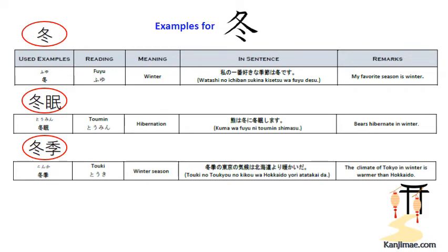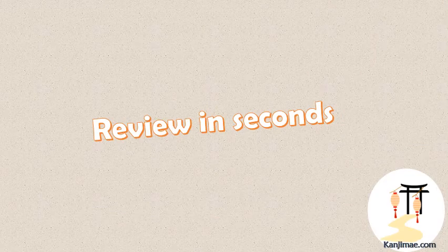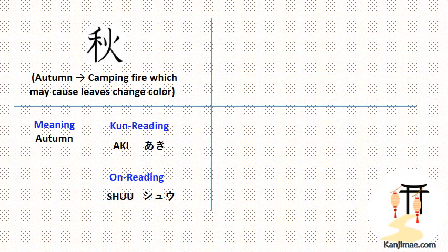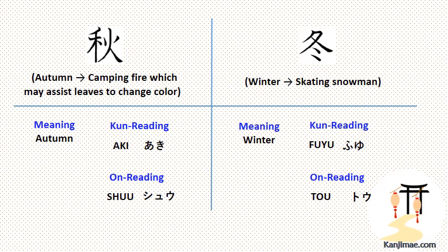Now let's review the last two kanji figures one more time. Our third kanji today, autumn kanji, can be remembered from the camping fire near the tree which may cause the leaves to change color. Its kun reading is Aki — remember Akira Kurosawa — and the on reading is Shu — remember his shooting films were incredible. The last kanji today is winter kanji, whose meaning can be remembered from the skating snowman in winter. Its kun reading is Fuyu — remember the full European tour the snowman dreams of — and Tou from 'tour' is the on reading.